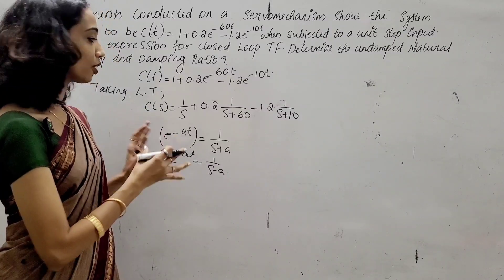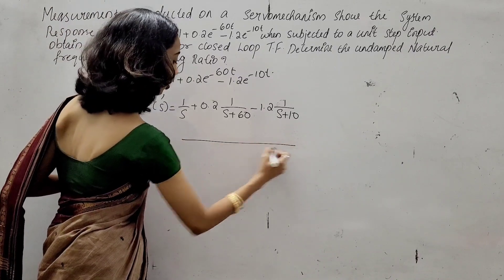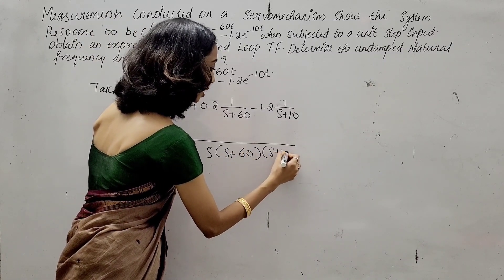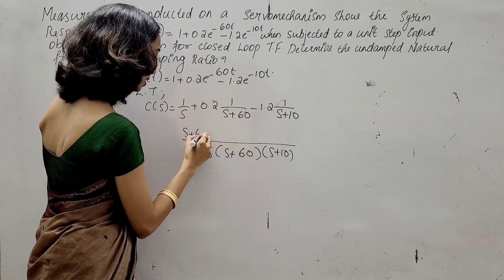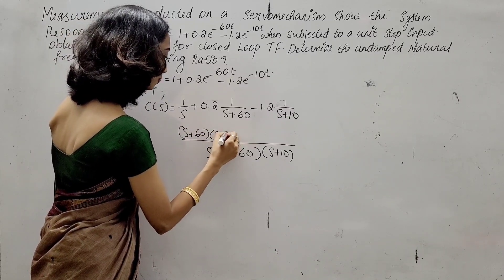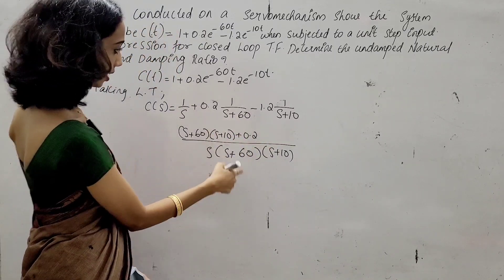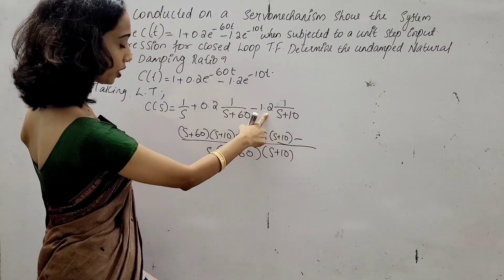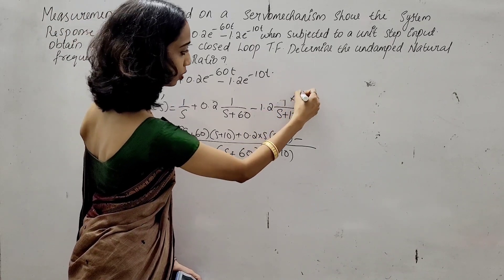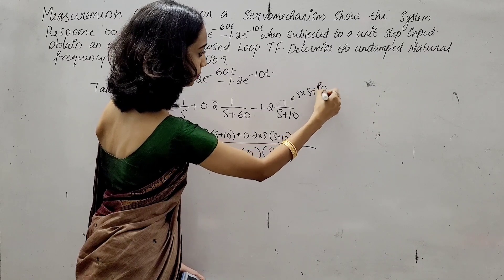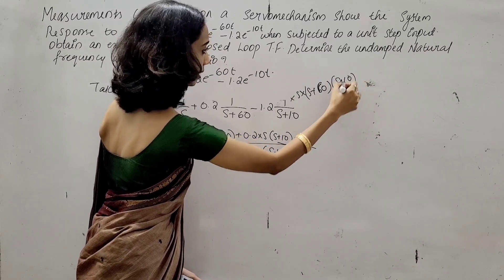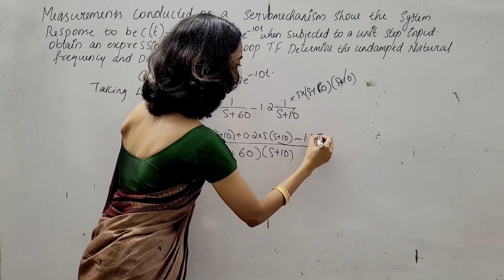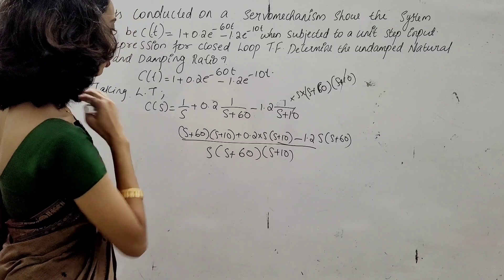Taking the LCM and multiplying: the denominator becomes S(S + 60)(S + 10). Expanding: S(S+60)(S+10) + 0.2(S+60)(S+10) − 1.2·S(S+60), then simplifying the expression by multiplying through each term.